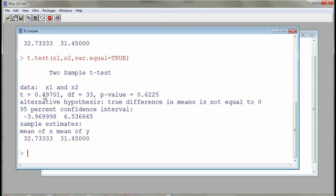We have our test statistic, degrees of freedom, p-value, a description of the alternative hypothesis, 95% confidence interval, and the display of the two means.